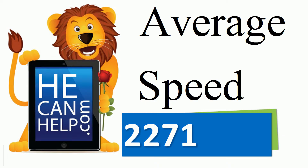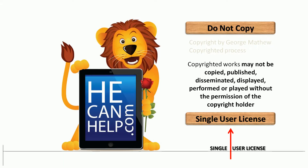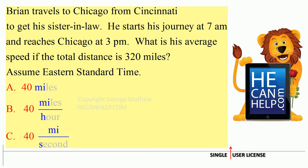Average speed. Brian travels to Chicago from Cincinnati to get his sister-in-law. He starts his journey at 7 a.m. and reaches Chicago at 3 p.m. What is his average speed if the total distance is 320 miles? Assume Eastern Standard Time.